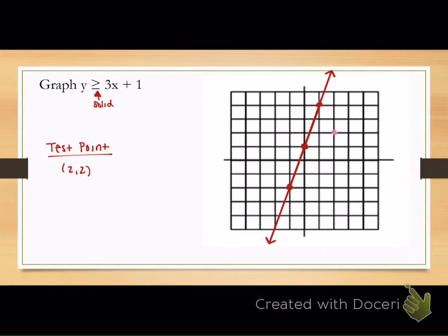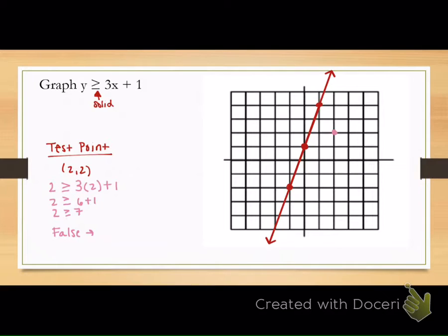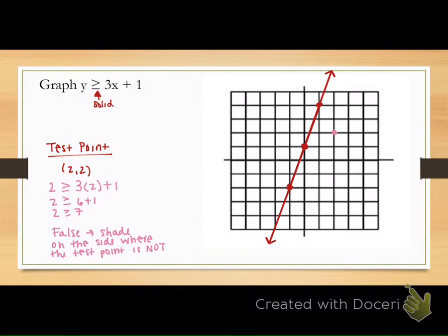We plug in (2, 2) and we get 2 is greater than or equal to 7. Is 2 greater than or equal to 7? No — that's a false statement. So if it's a false statement, we shade away from our point.